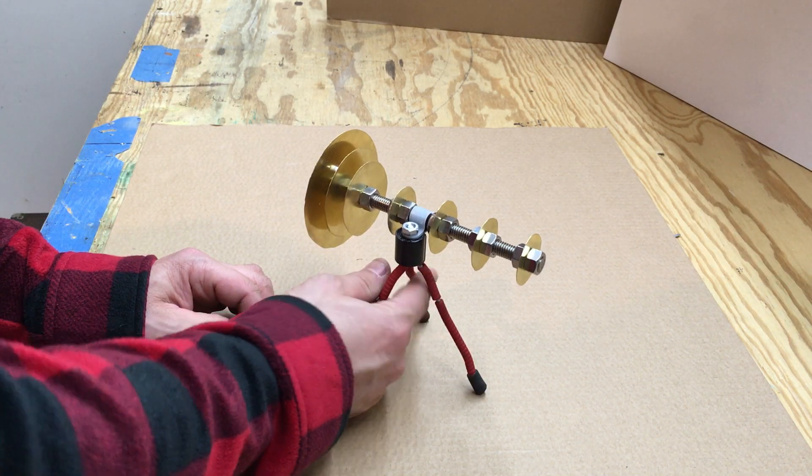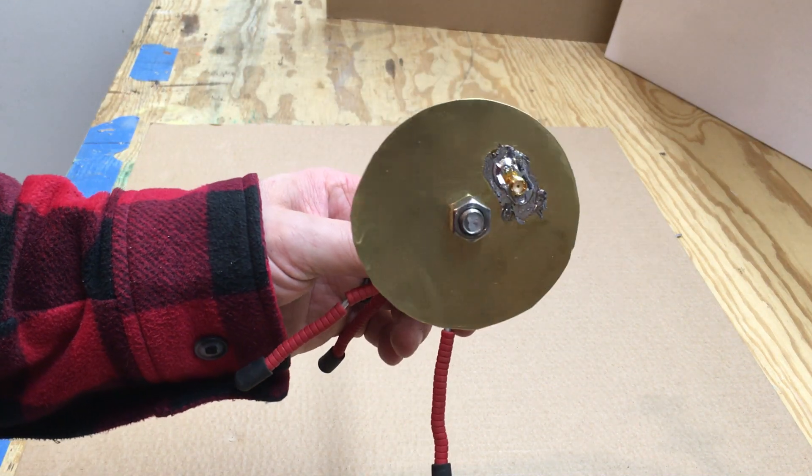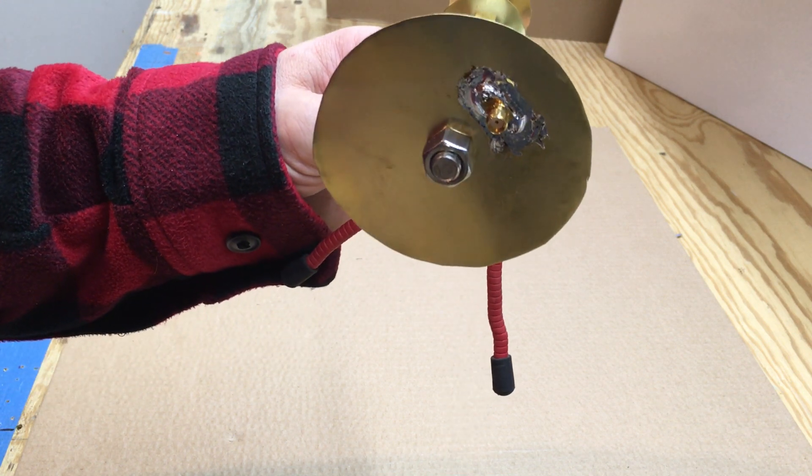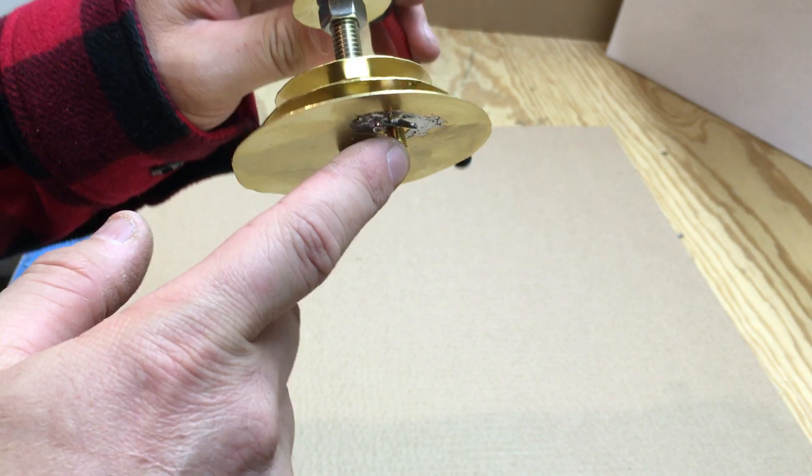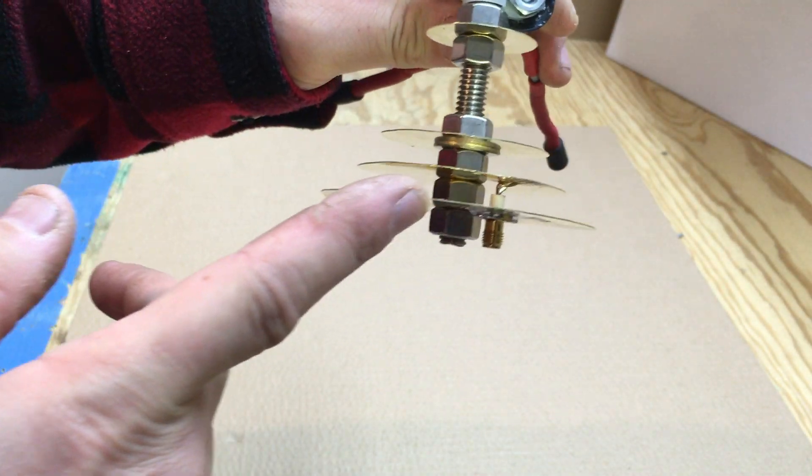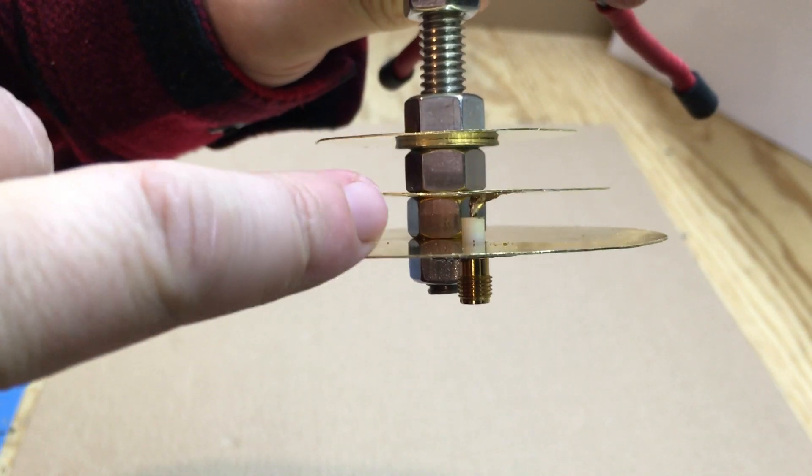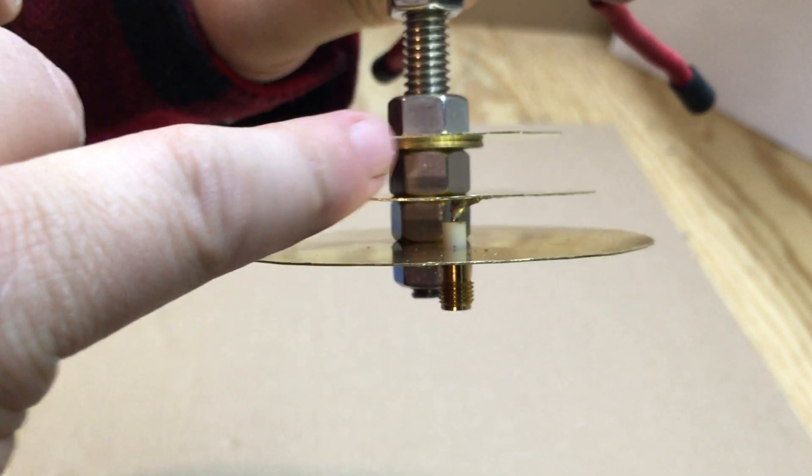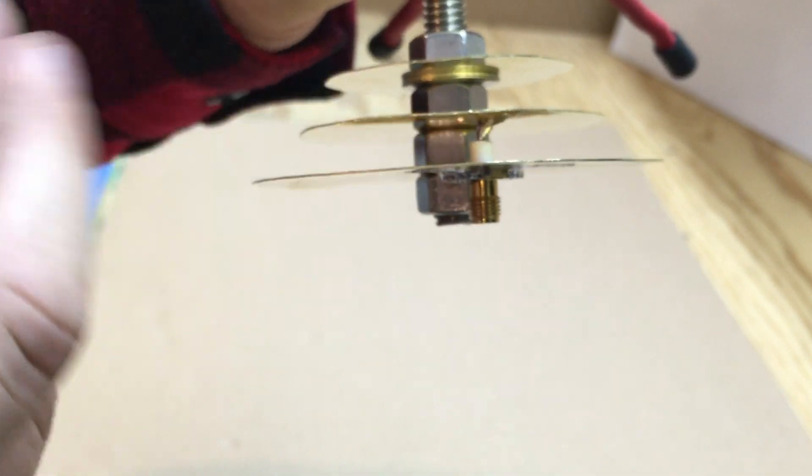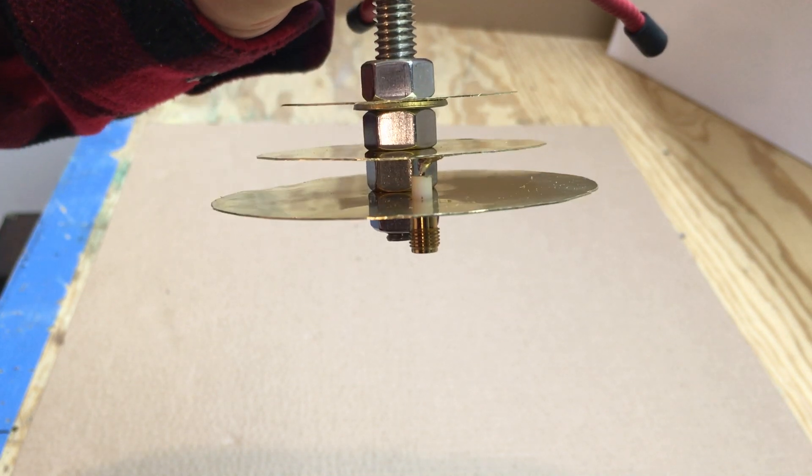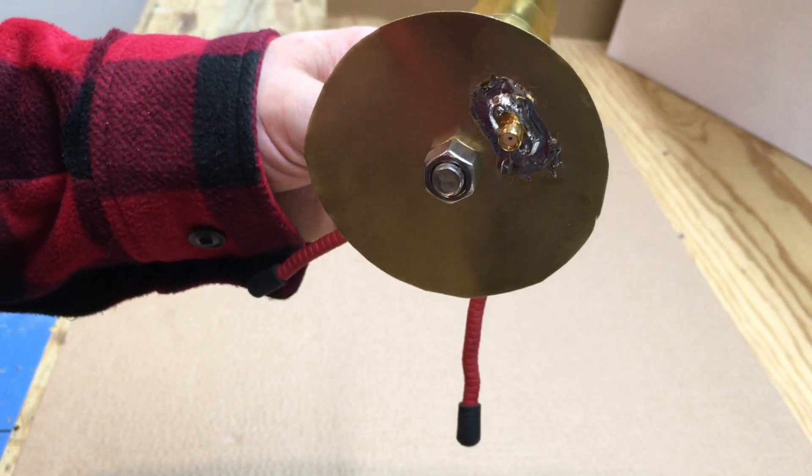So with that being said, the SMA connector that I'm using is actually an SMA, it's not an RP SMA. It's a little bulkhead type, and as you can see, in between there the center conductor is soldered to the second piece. The shield is soldered to the big piece, so it's kind of hard to see there.